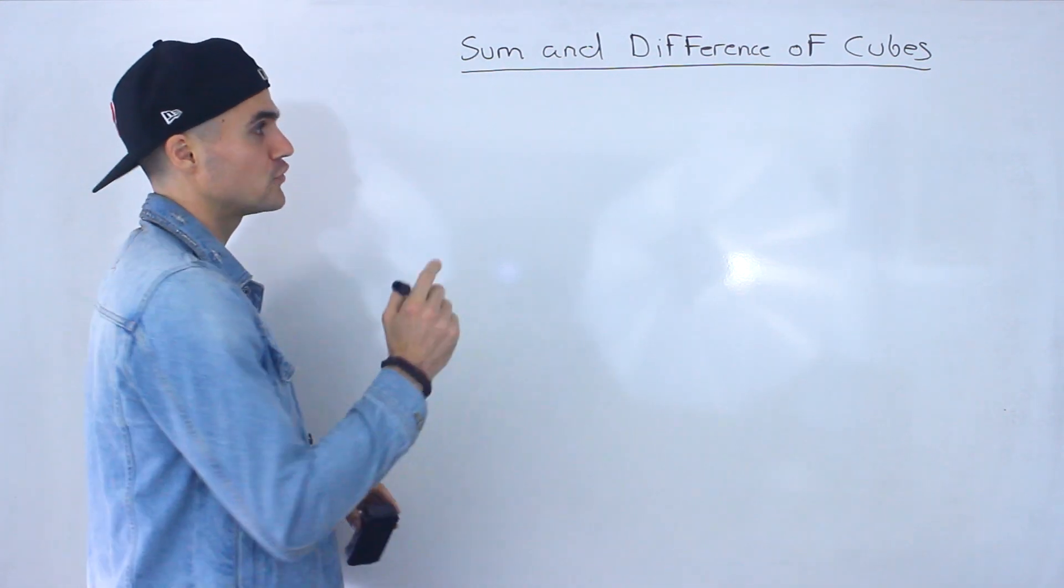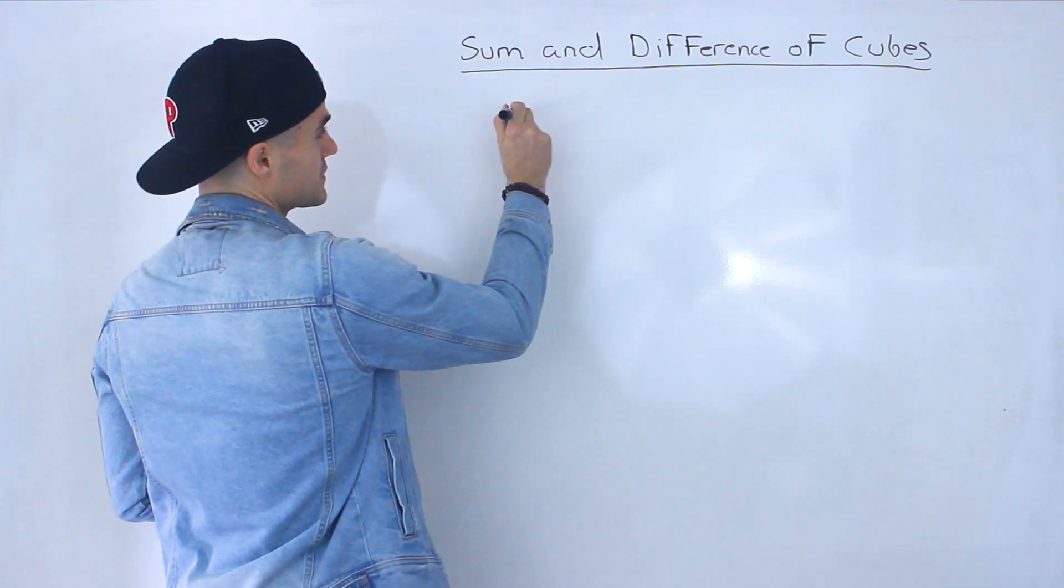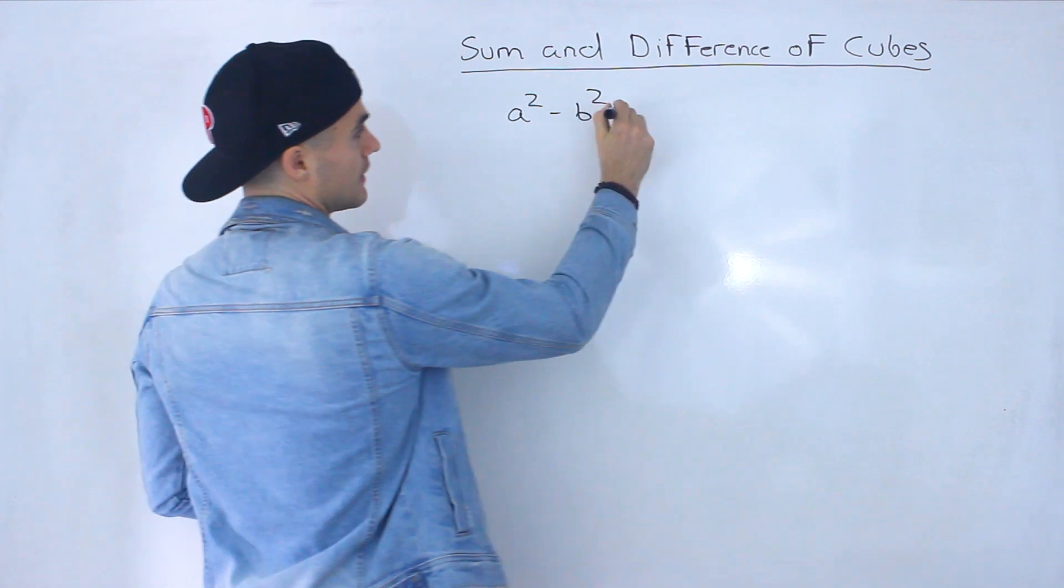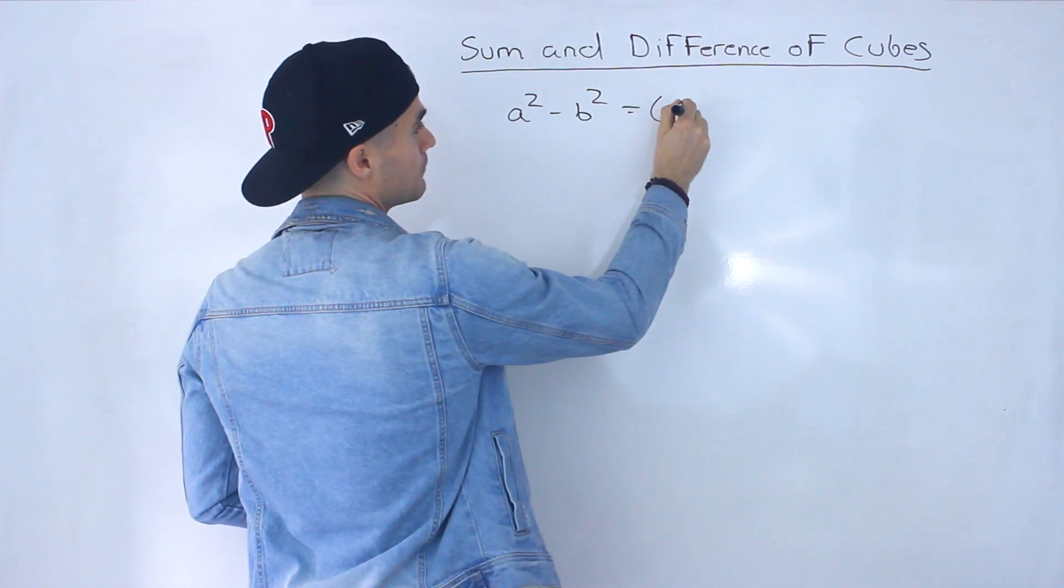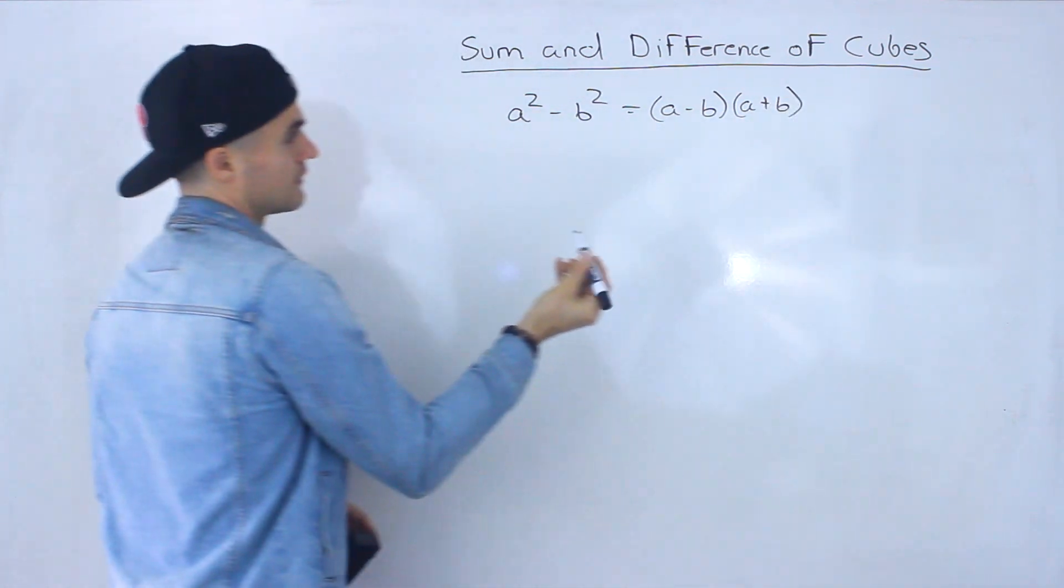And to begin discussing the sum and difference of cubes, I actually want to start off by reviewing the difference of squares. So if you remember, difference of squares, if we got something in this format, this is basically going to equal a minus b, a plus b, like that.